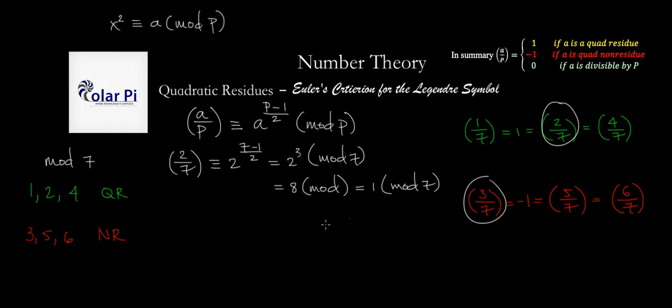Let's check the other guy and we're done in this video. What is 3 over 7? 3 over 7 would have to be congruent to 3 to the 7 minus 1 over 2 again, so we know that that's 3, so 3 to the 3rd.